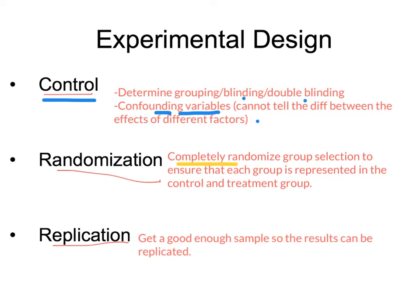Randomization means completely randomizing group selections to ensure each group is represented in both the control and treatment groups. For example with weight loss, you wouldn't want only sedentary people in the control group and fitness enthusiasts in the treatment group — you'd want an equal mix in both. Replication means getting a large enough sample so results can be replicated. Would you take a flu vaccine tested on 100 people or one tested on 100,000? You want adequate testing.